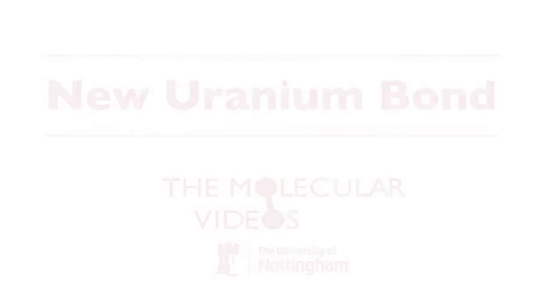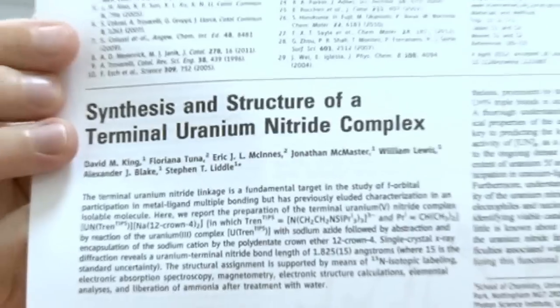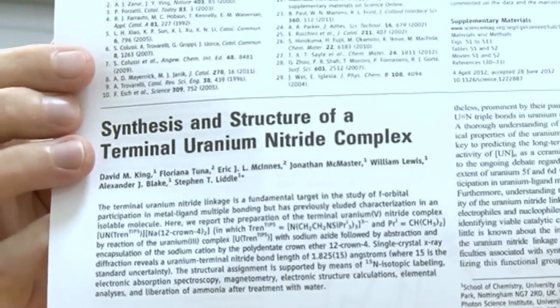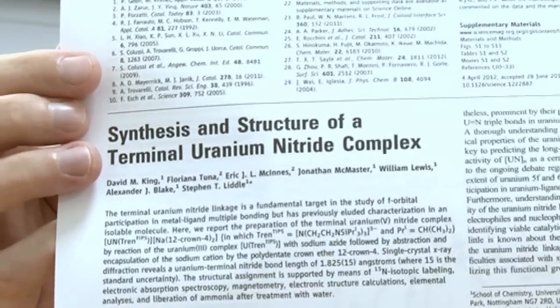This is a paper we've just published and we're pretty excited by this. So this is a uranium nitride which we've made, and if you're wondering what on earth one of those is, it's a compound with three bonds between uranium and nitrogen.